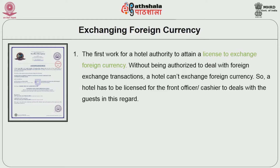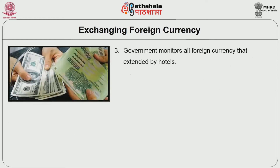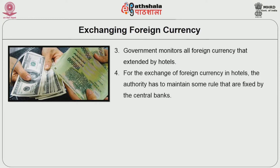The first step for hotel authority is to obtain a license to exchange foreign currency. Without being authorized to deal with foreign exchange transactions, a hotel cannot exchange foreign currency — the front office cashier must be licensed to deal with guests in this regard. The second point is that the rate of exchange should be exhibited conspicuously, as central banks govern the rate and update it on a daily basis. The third point is that the government monitors all foreign currency exchanged by a hotel, and the authority must maintain rules fixed by the central banks.